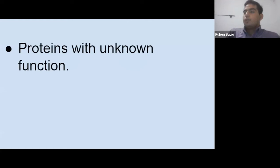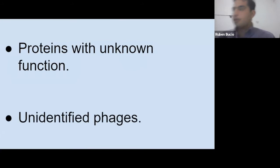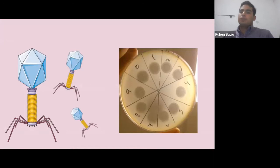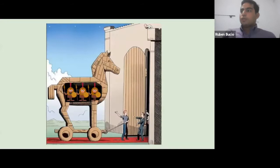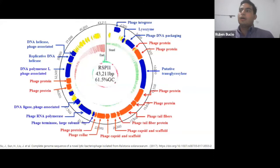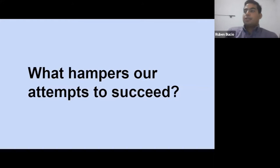Maybe you have thousands of setbacks, but I would like to talk about two specifically: proteins with unknown function and unidentified phages. We are all here trying to use phages as an alternative to multi-drug resistant bacteria, so of course we don't want to introduce a Trojan horse to our food or patients in a clinical trial. To avoid that, we need fully annotated genomes, and we all know that in some cases it's really hard to achieve — or almost impossible.